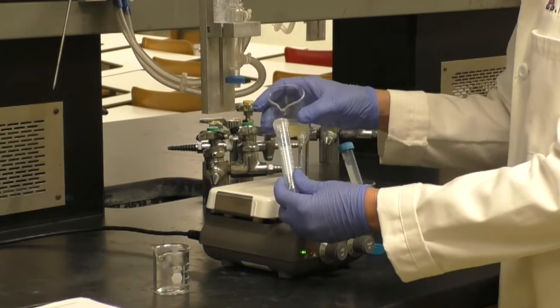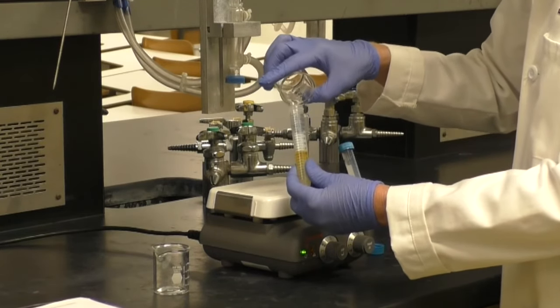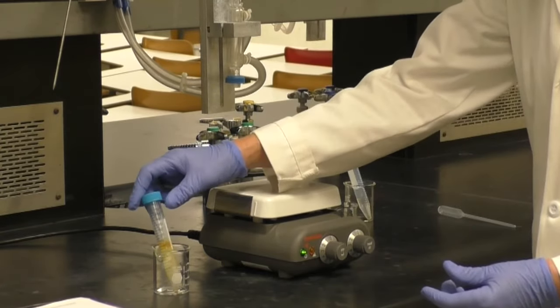Pour that solution into another clean, dry, 15 mL centrifuge tube. Place it in a beaker and allow the layers to separate.